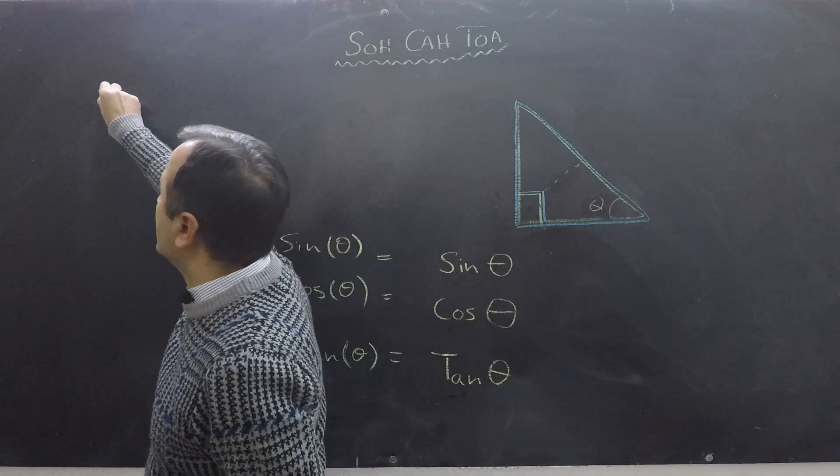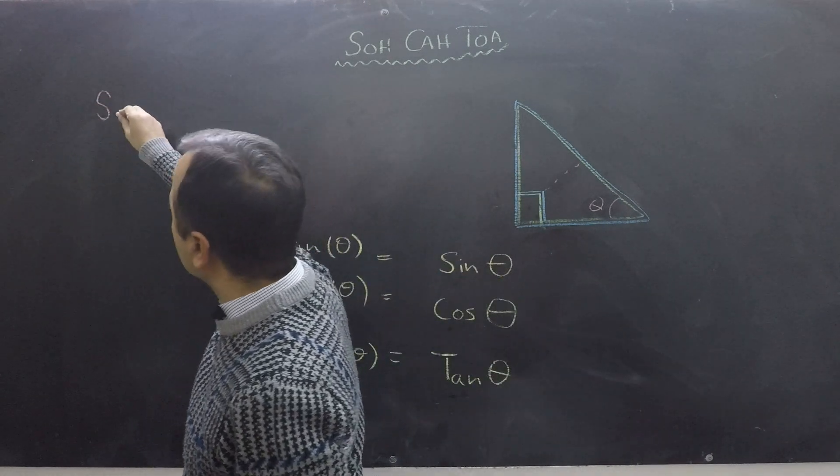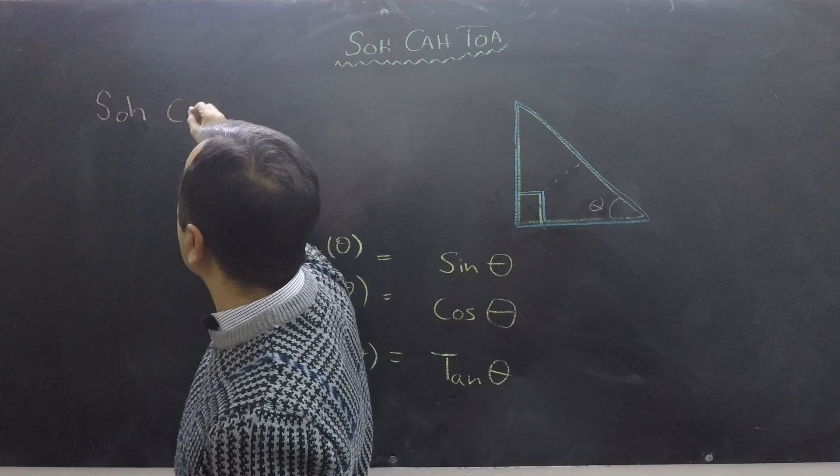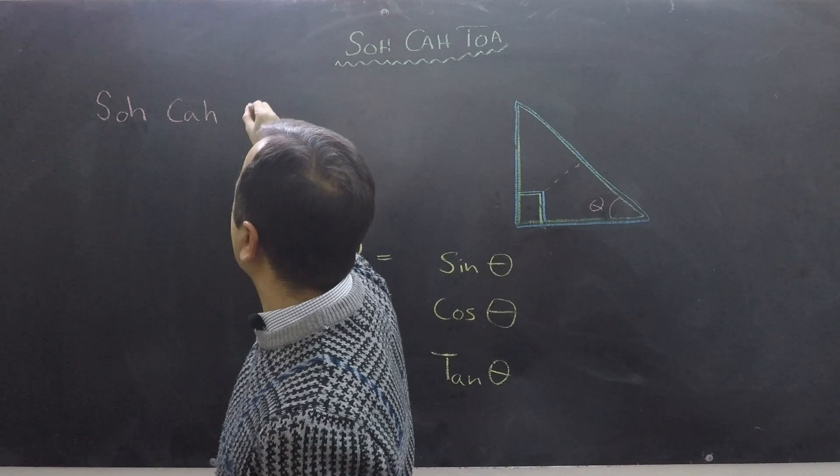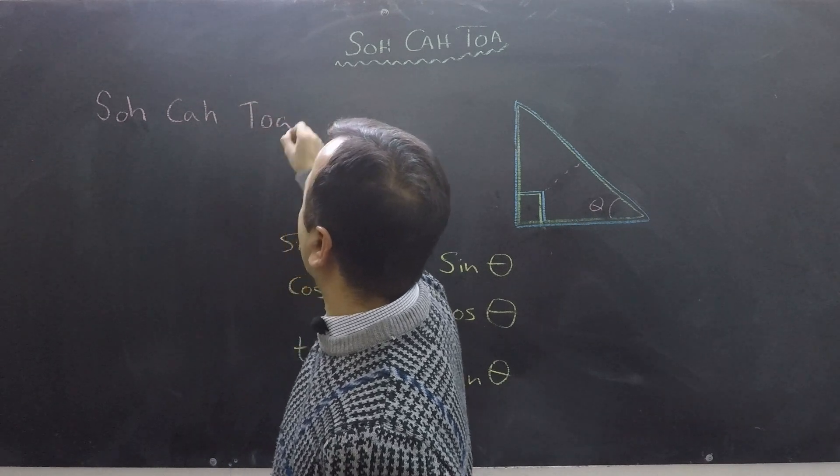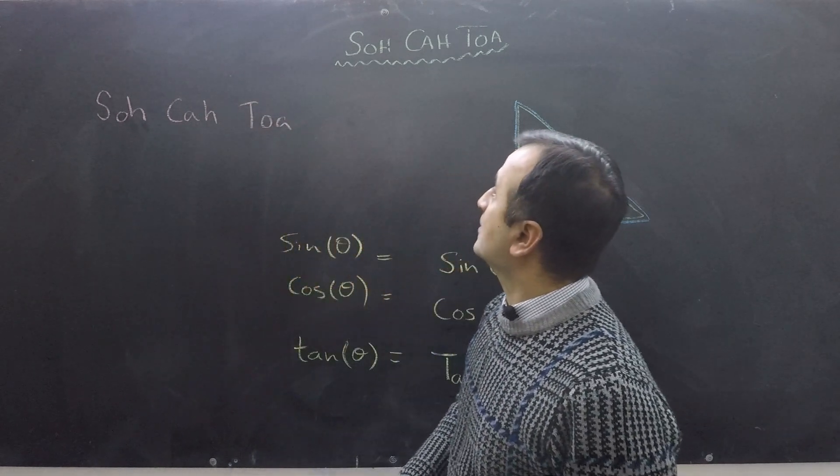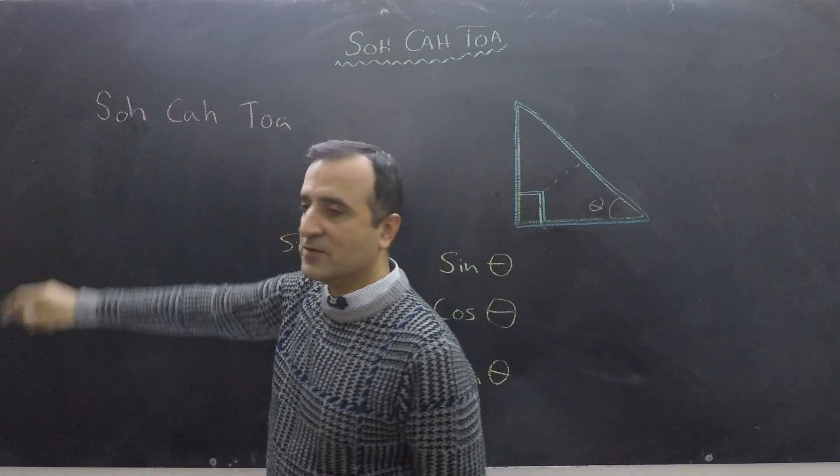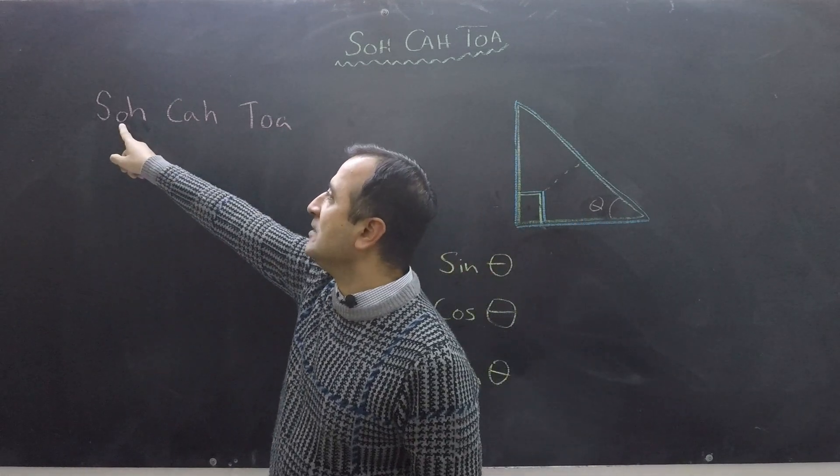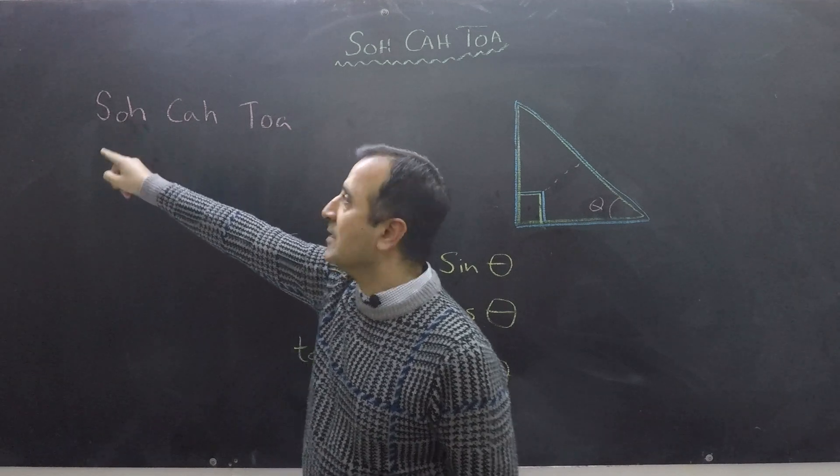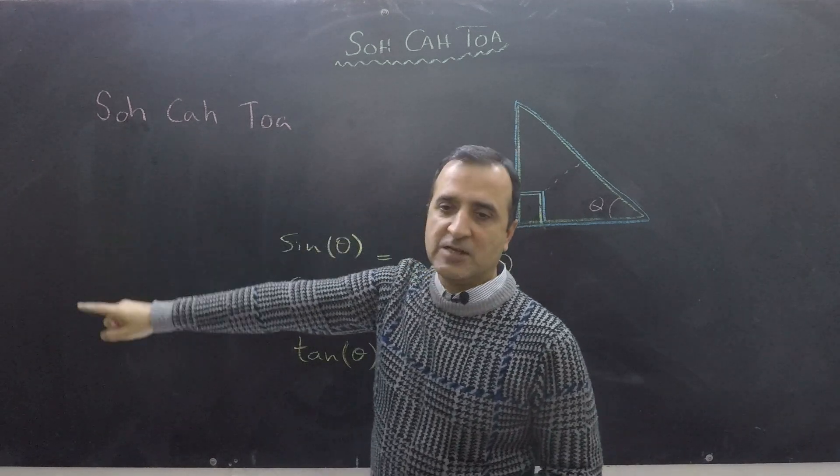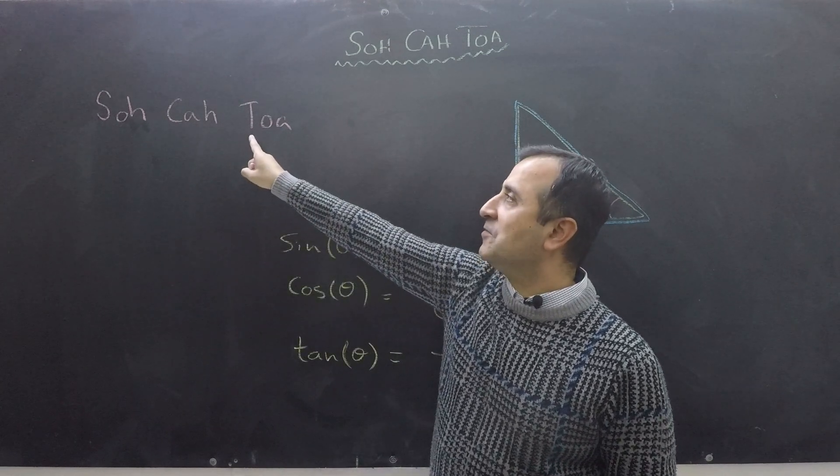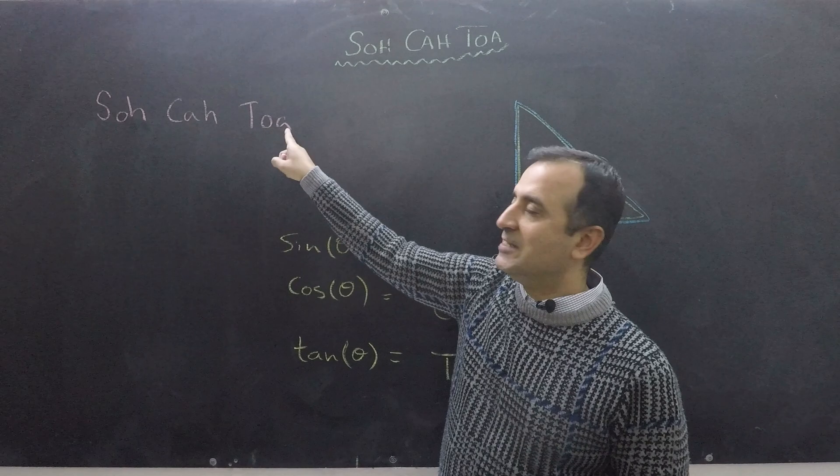So in USA we write SOHCAHTOA. This is saying that sine theta equals opposite divided by hypotenuse, and cos equals adjacent divided by hypotenuse, and tan equals opposite divided by adjacent.